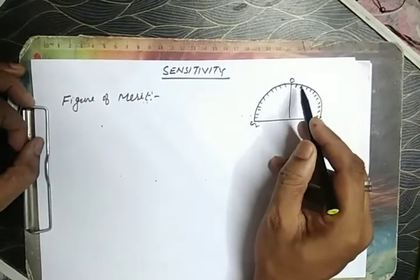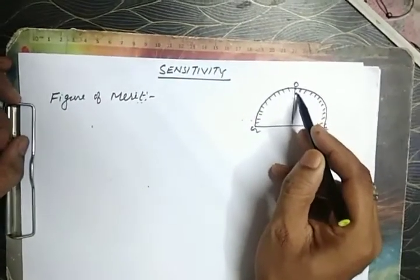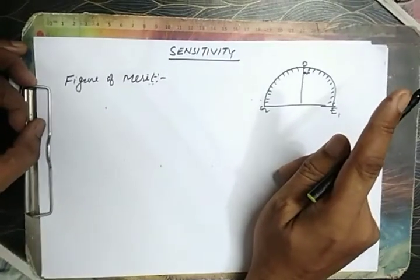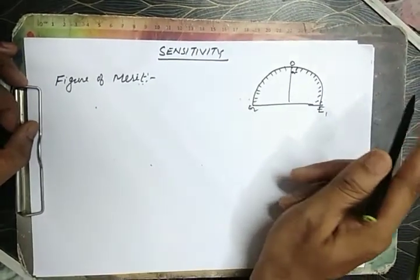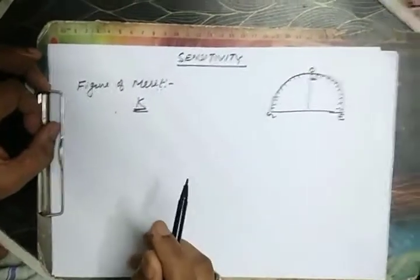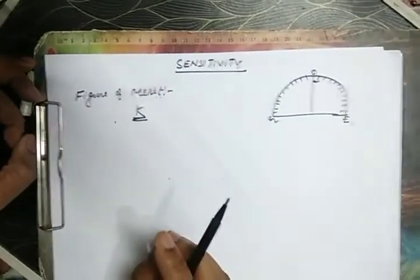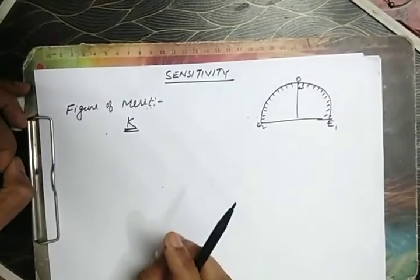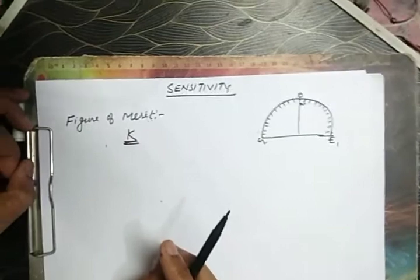Now, amount of current required to move the needle by one division is called as figure of merit. And it is denoted by K. If we know the figure of merit, we can calculate total current that can be passed through the galvanometer.